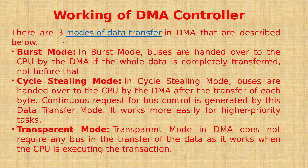There are three different data transfer modes in the DMA controller: burst mode, cycle stealing mode, and transparent mode. In burst mode, the buses are handed over to the CPU by the DMA only after the entire data transfer is complete. In cycle stealing mode, buses are handed over to the CPU after the transfer of each byte, so the DMA continuously requests bus control for each byte transferred. In transparent mode, the DMA does not require any bus during data transfer, as it operates when the CPU is executing other transactions.